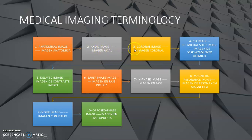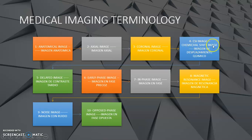Number three: coronal image — imagen coronal. Number four, guys, is CSI image, or chemical shift image. Esta palabra significa imagen de desplazamiento químico.